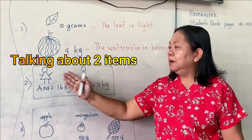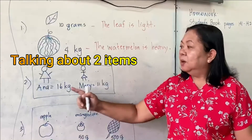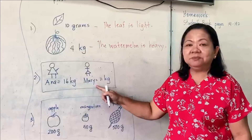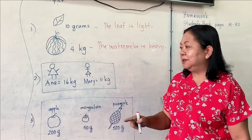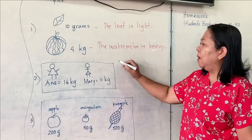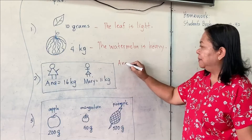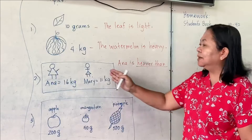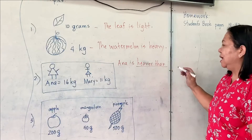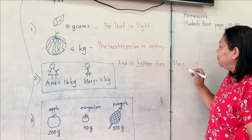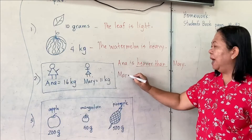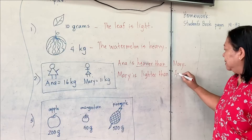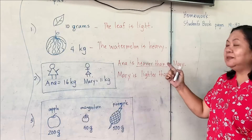For example number two, we will talk about two girls. One whose name is Anna — her mass is 16 kilograms — and one whose name is Mary, whose mass is 11 kilograms. We will compare them. Anna is heavier than Mary because I am talking about two girls. And Mary is lighter than Anna.